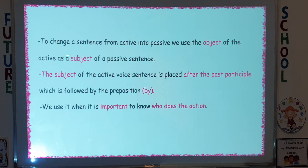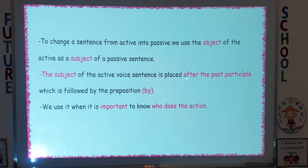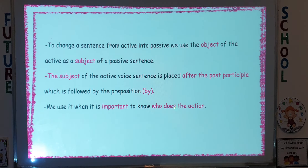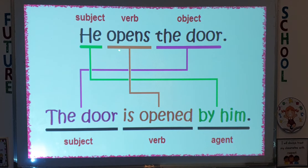To change a sentence from active to passive: we use the object of the active sentence as the subject of the passive sentence. The subject of the active voice sentence is placed after the past participle, followed by the preposition 'by.' We use 'by' when it is important to know who does the action.